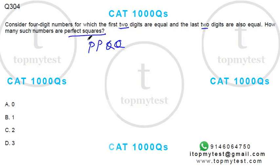How many such numbers are perfect squares? Okay, need a perfect square. So I can write this as 11 times 100p plus q. The number will be of this format, which means now this should be a perfect square.